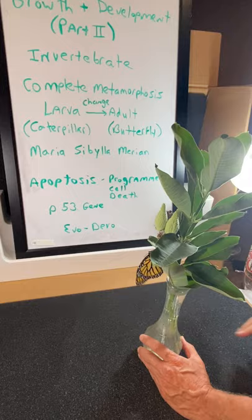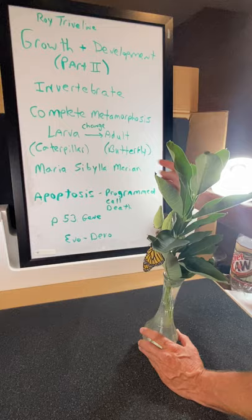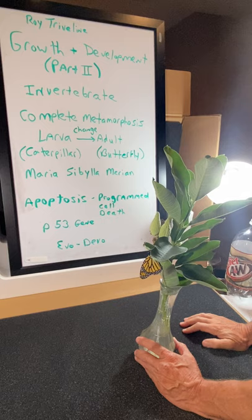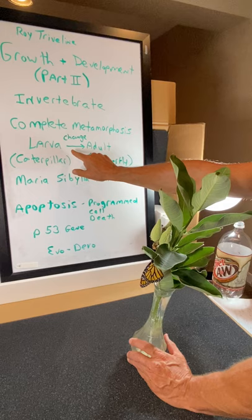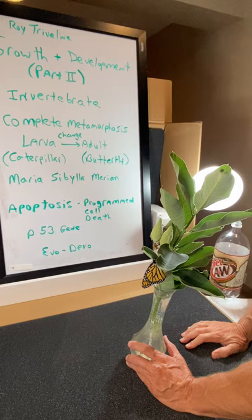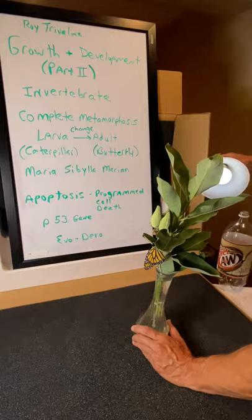This is an invertebrate — it doesn't have a backbone — and it's going through complete metamorphosis. This is the adult stage. I forgot to bring the caterpillar down, but I'll show it later. We're going to release him today and he'll be flying around making more monarchs. Remember: if you can find out the first stage and the middle stage after the larva, send me an email and we'll make sure you get one of those magnifying glasses.